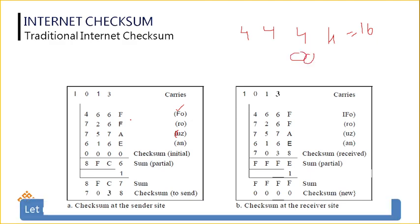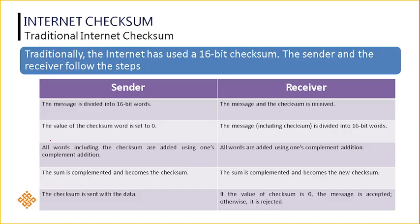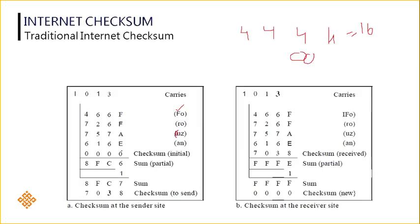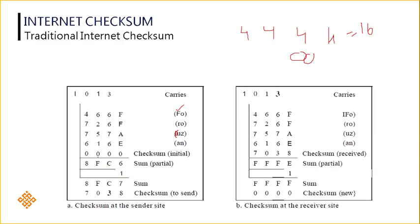Which is our next step? The value of the checksum word is set to 0 — the value is set to all zeros. Next, the third step is: all words including the checksum are added using one's complement addition.